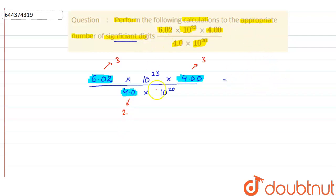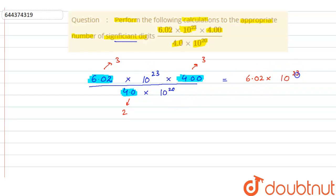The answer should be expressed in two significant digits. When we calculate, the 4 cancels with 4, and we get 6.02 × 10^(23−20), which gives us 6.02 × 10³.